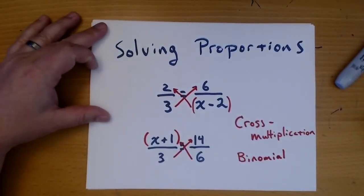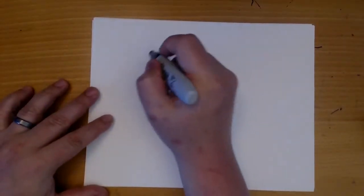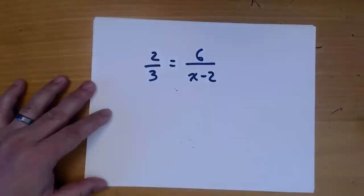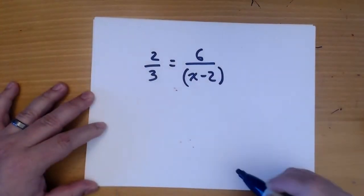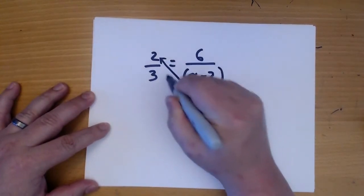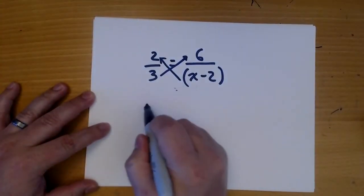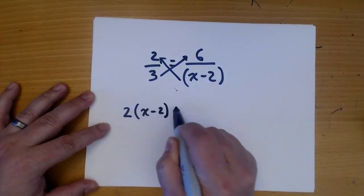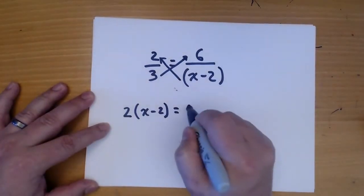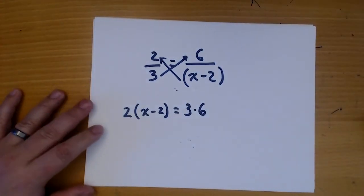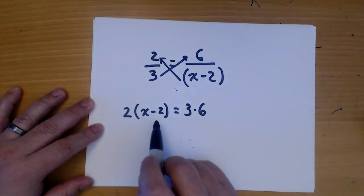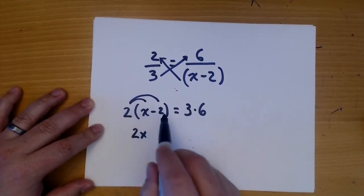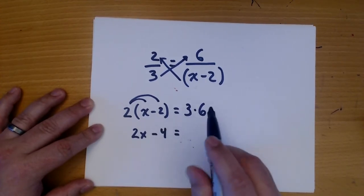So let's do these examples. So first we wrap parentheses around the binomial and then cross multiply. And so this will be 2 times x minus 2 and 3 times 6. And this is why we wrap them in parentheses because now we have to do a distribution. So 2 times x is 2x. 2 times negative 2 is negative 4. And 3 times 6 is 18.